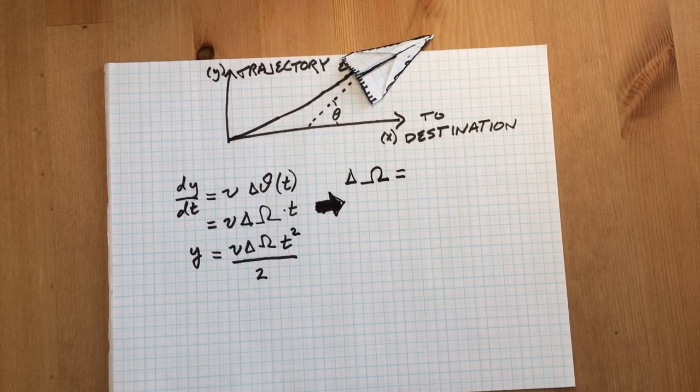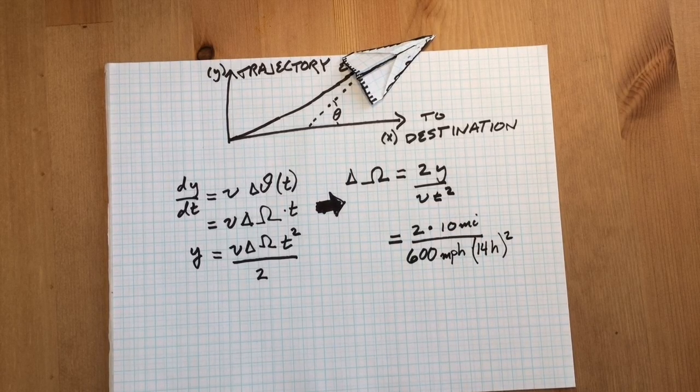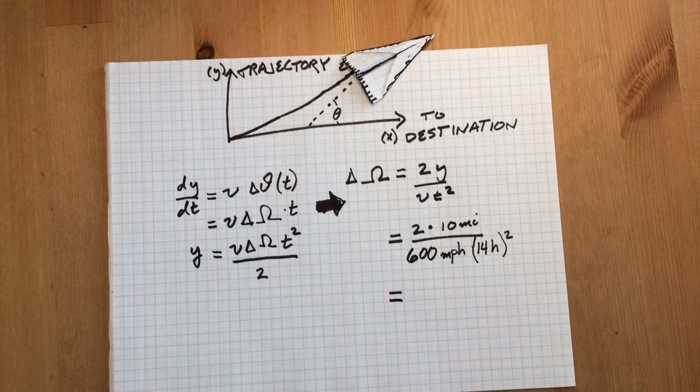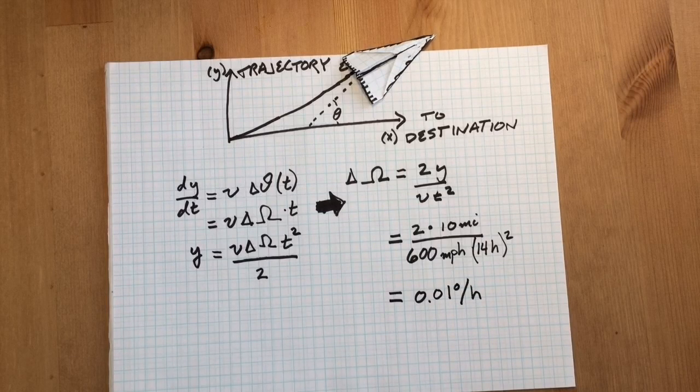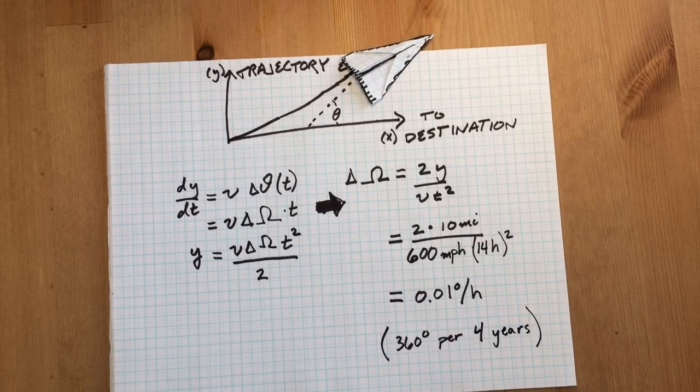Solving for this bias error in our hypothetical trip to Australia, we measure that the bias error has to be less than 0.01 degrees per hour. This is extremely small rotation, equivalent to one revolution per four years.